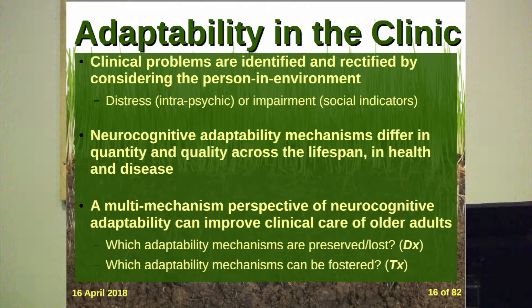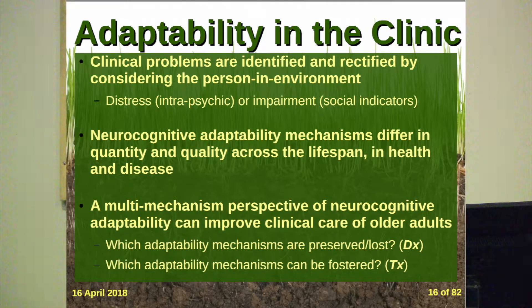Adaptability has a lot to do with how we identify problems when people come to see us. They're often distressed, not doing as much as they used to, or other people notice they're falling short — a mismatch between that person and their environment. Adaptability mechanisms differ in quantity and quality across the lifespan and in health and disease. The mechanisms a healthy person has that allow them to flex are impaired when dementia pathology sets in. A multi-mechanism perspective can improve clinical care — we can consider which mechanisms are preserved and lost to describe diagnoses, and which can be fostered to highlight treatment opportunities.